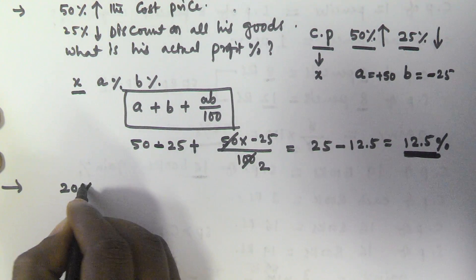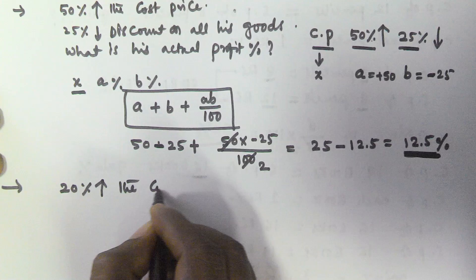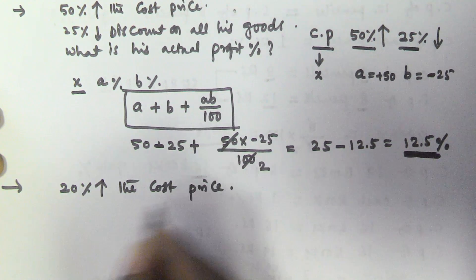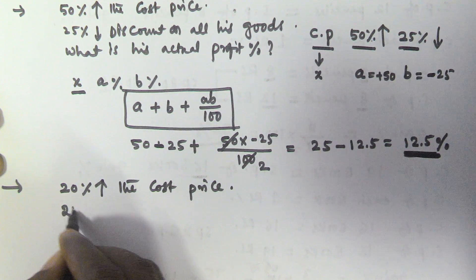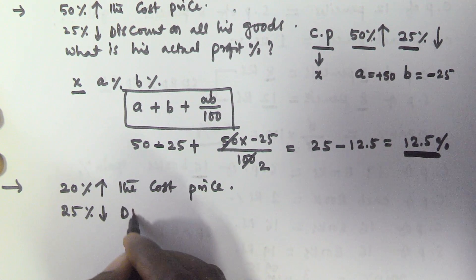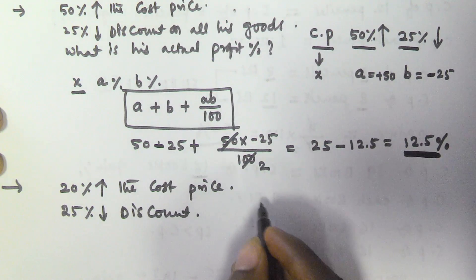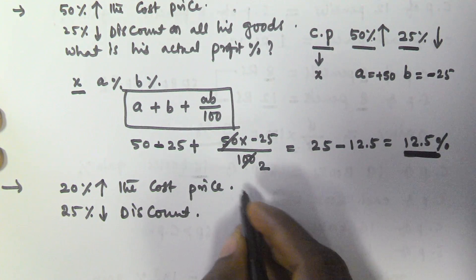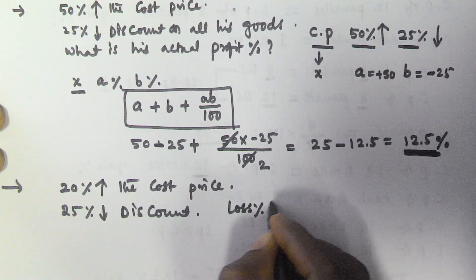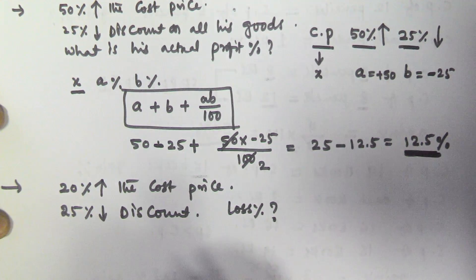Let us see another example. A seller marked all his goods 20 percentage above the cost price, and after that he provided 25 percentage discount. We have to find his loss percent.